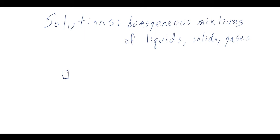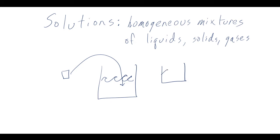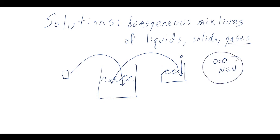You can put a solid inside of a liquid and make a solution, which is mostly what we'll talk about today. We'll also talk about liquid-liquid solutions. You can also put a gas inside a liquid to make a solution, or take one gas molecule — oxygen — and add it to another gas molecule — nitrogen — and you have a homogeneous mixture of gases. This is what we call air. These are all solutions: a uniform, equal composition throughout of a mixture of liquids, solids, or gases.